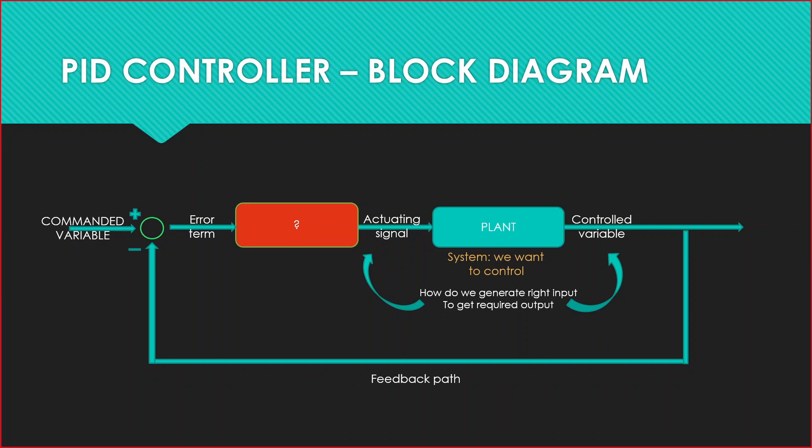Feedback path, and when it was compared with the command variable, we get the error. How can we control this error? To control this error, we have to put a controller in this place, we are going to use some controller.